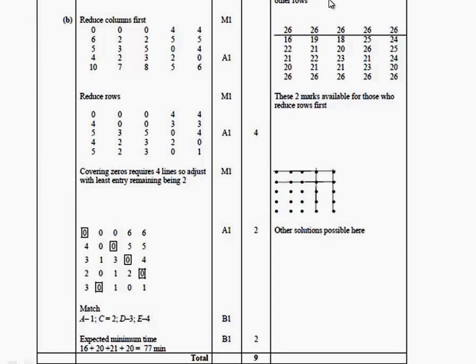So, that's what we did to start with. Reducing columns first. Well, there's a method mark followed by an answer mark. You then reduce rows. Again, a method mark followed by an answer mark.